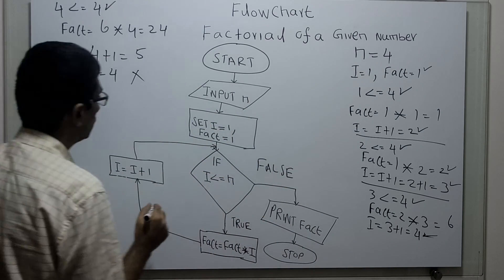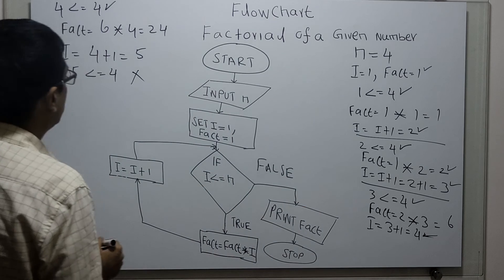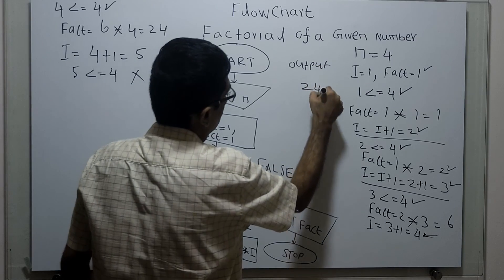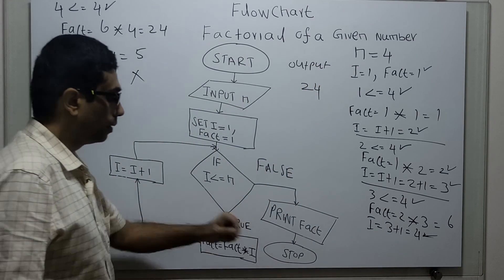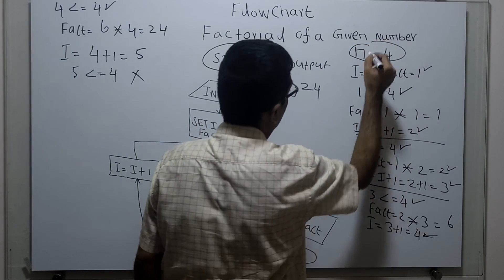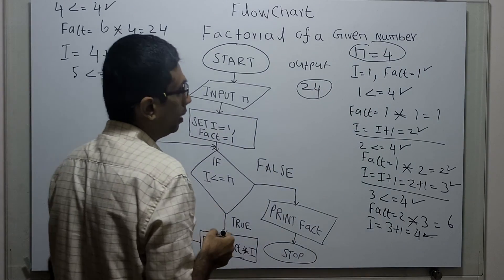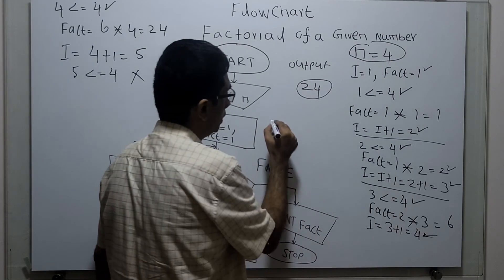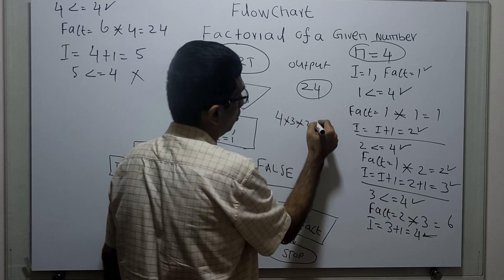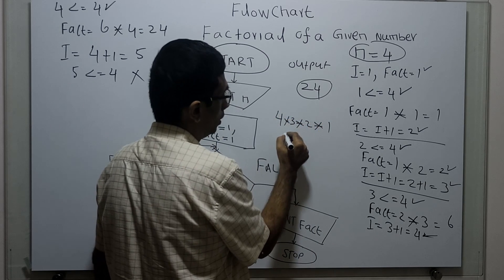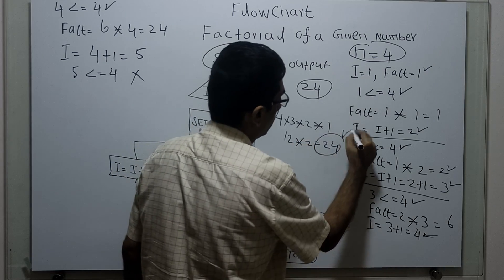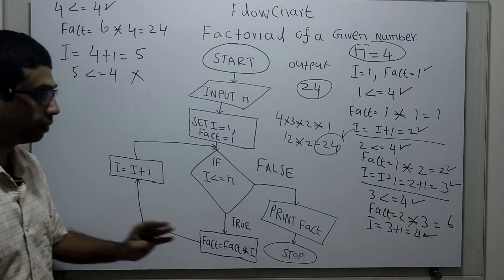So we are coming out and printing the fact — my output is 24. Now I am calculating the factorial, which is 4 into 3 into 2 into 1. 4 into 3 is 12, 12 into 2 is 24. My answer is correct — this flowchart is working perfectly.